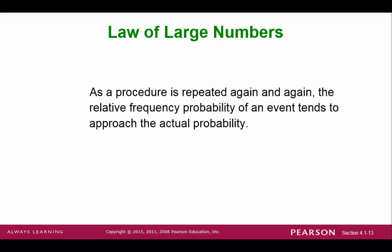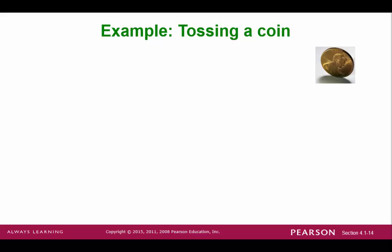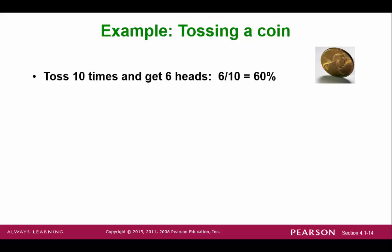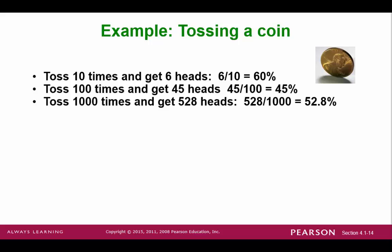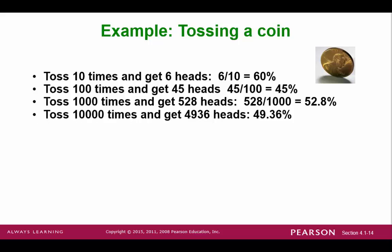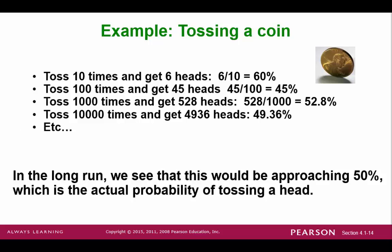The law of large numbers is a rule that relates the relative frequency approximation to the classical approach. It says that the more you do an experiment, the closer the relative probability will be to the actual or real probability. For example, tossing a coin 10 times might give you 6 heads; 100 times might give 45 heads; 1,000 times might give 528 heads; 10,000 times might give 4,936 heads. As you can see, these probabilities tend to get closer and closer to 50%, which is the true probability of tossing a coin and getting heads.